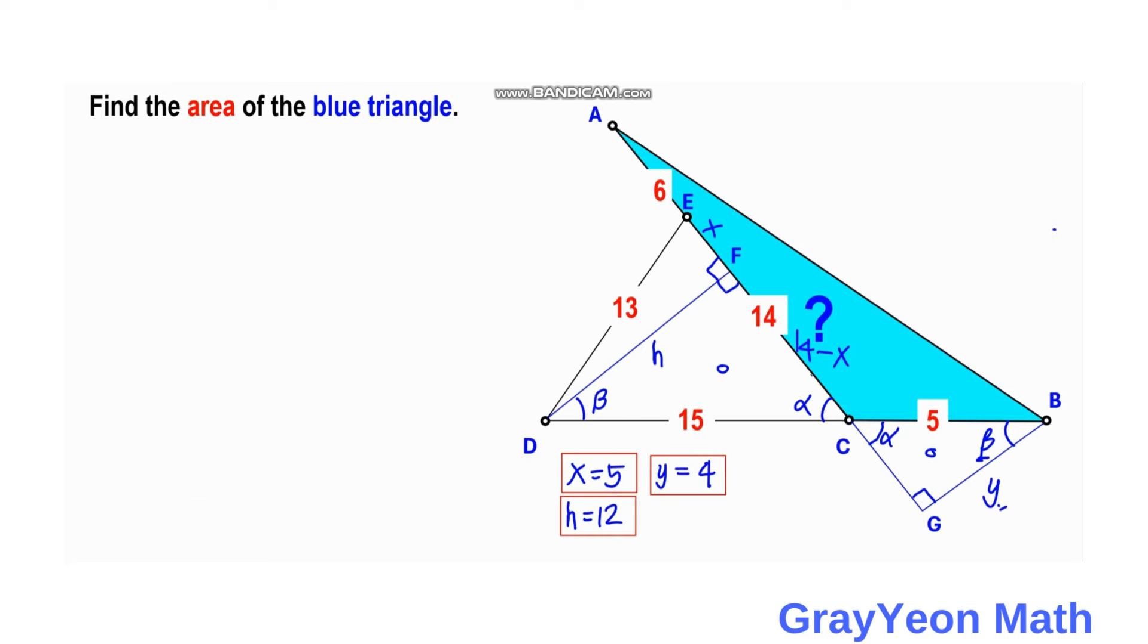Now for the final step, the area of triangle ABC is equal to one-half times the base, which is AC, times the height, which is BG.